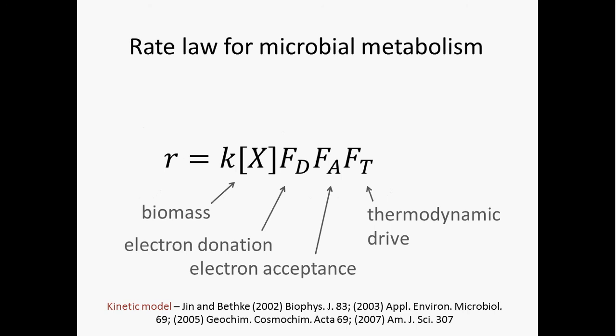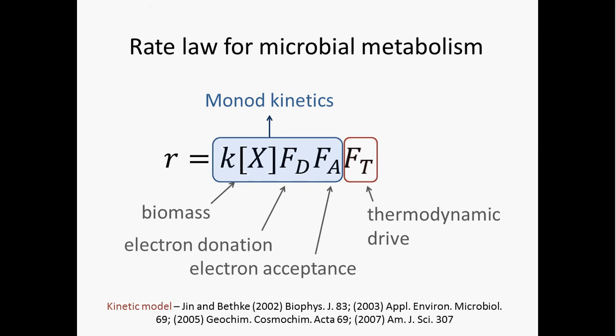This is the rate law for microbial metabolism that we've been organizing our discussion around. That term on the right is the thermodynamic potential factor I described in detail in the previous lecture. I hope that lecture helped illustrate one of the ways that environments can control microbial activity — by affecting the thermodynamics, the delta G of the metabolic reaction. But thermodynamics is not the only influence on microbial reaction rates, and this Monod equation helps us take into account some of these other important factors.